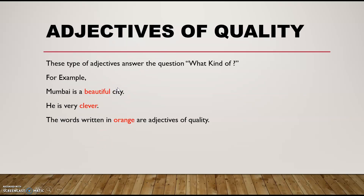Let's look at the definition of adjectives of quality. These types of adjectives answer the question: what kind? For example, 'Mumbai is a beautiful city.' What kind of city is Mumbai? It's a beautiful city. Second example: 'He is very clever.' What kind of person is he — is he clever or is he stupid? The words written in orange are adjectives of quality.